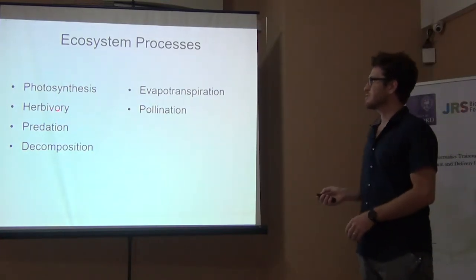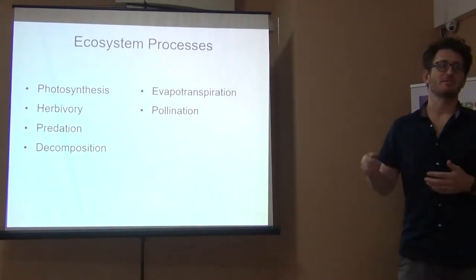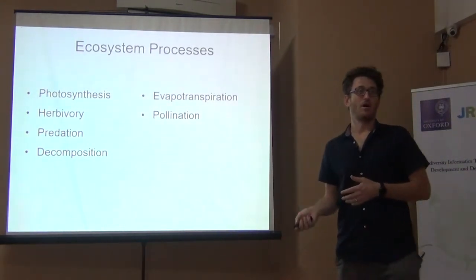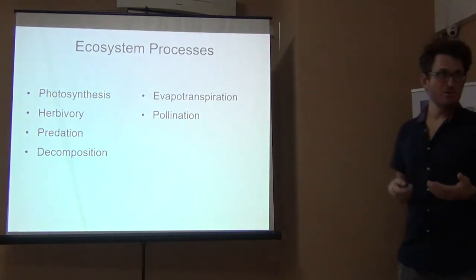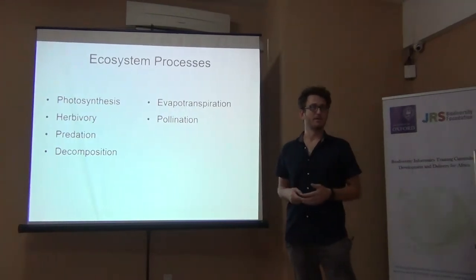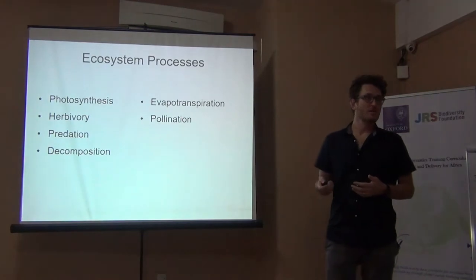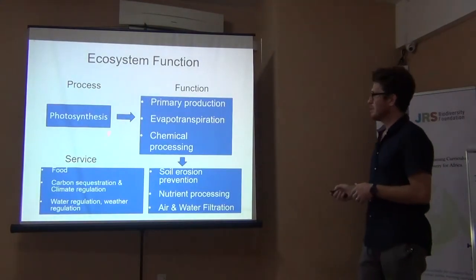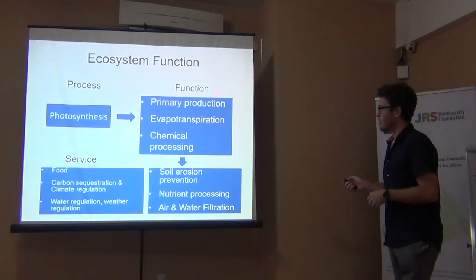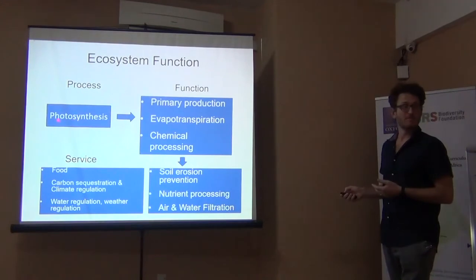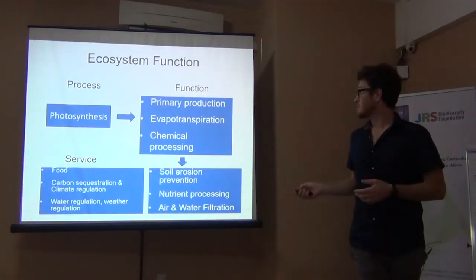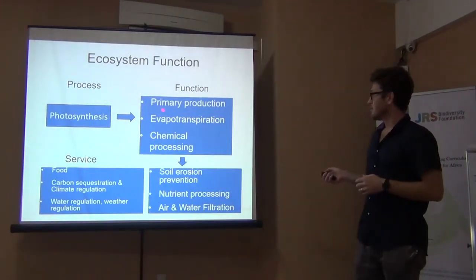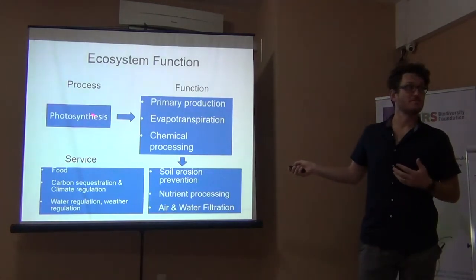Ecosystem processes include photosynthesis, herbivory, predation, decomposition, evapotranspiration, and pollination — all processes occurring in an ecosystem. Together they have different functions. The function of evapotranspiration is partly to cycle water through the ecosystem. The function of pollination is to spread gametes and allow for reproduction. From the process of photosynthesis you get functions such as evapotranspiration, chemical processing — converting carbon into sugars and other molecules — and the production of biomass.